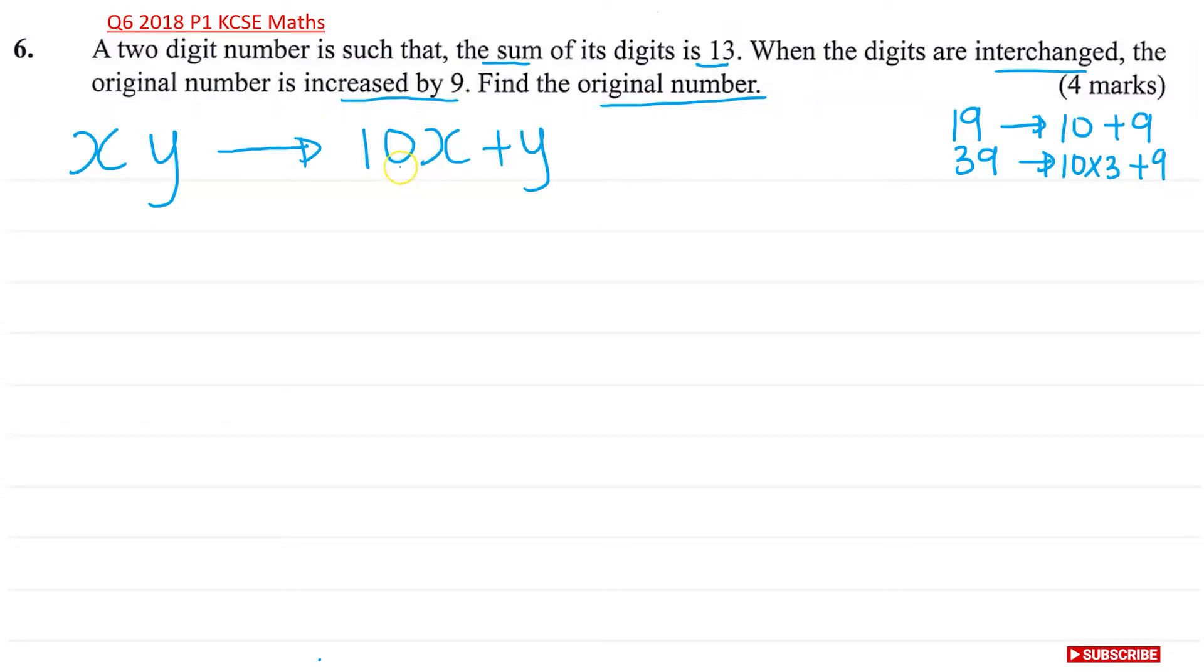Now I'm also told when the digits are interchanged, the original number is increased by 9. So if I write 10Y plus X. Now I'm told this number is now increased. The original number is increased by 9 if I interchange. Which means if I take this number here and I subtract that number, I should get a 9.